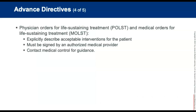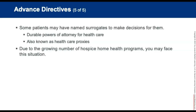You may encounter Physician's Orders for Life-Sustaining Treatment, or POLST, and Medical Orders for Life-Sustaining Treatment — MOLST — forms when caring for patients with terminal illnesses. These medical orders explicitly describe acceptable interventions for the patient and must be signed by an authorized medical provider to be valid. If you encounter these documents, contact medical control for guidance. Some patients may have named surrogates, called durable powers of attorney for healthcare, also known as healthcare proxies, to make decisions for them when they can no longer do so themselves.